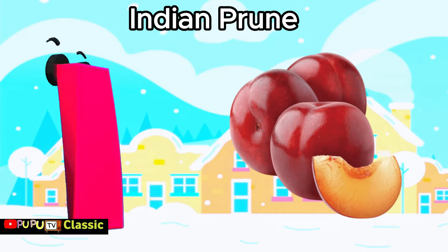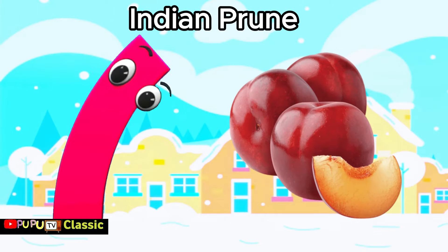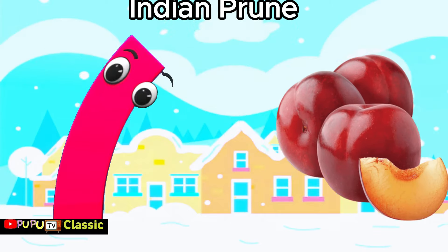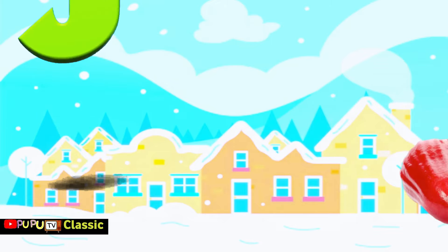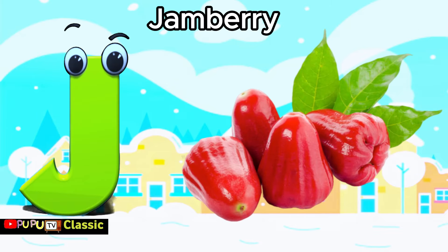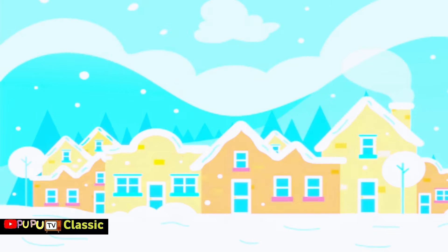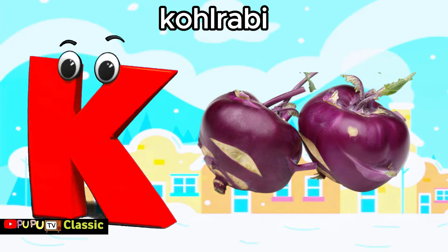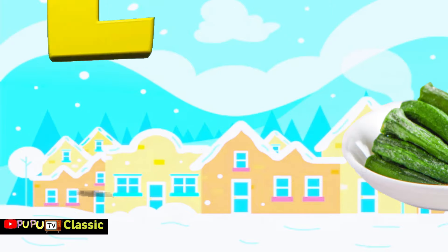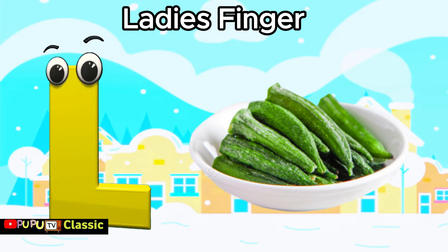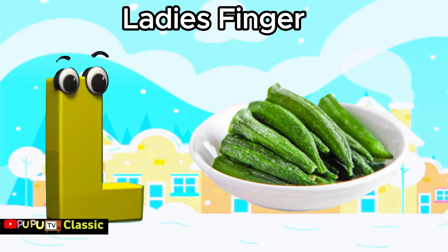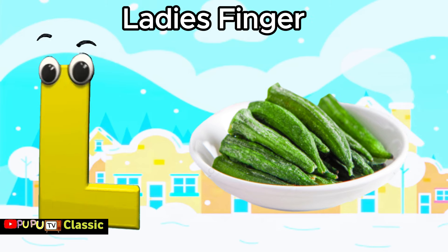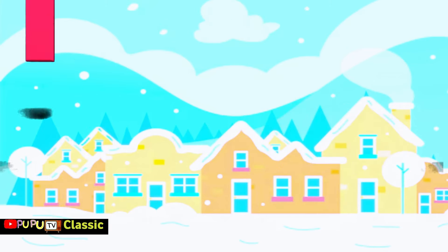I is for Indian prune, i, Indian prune. J is for jamberry, j, jamberry. K is for kohlrabi, k, kohlrabi. L is for lady's finger, l, lady's finger.